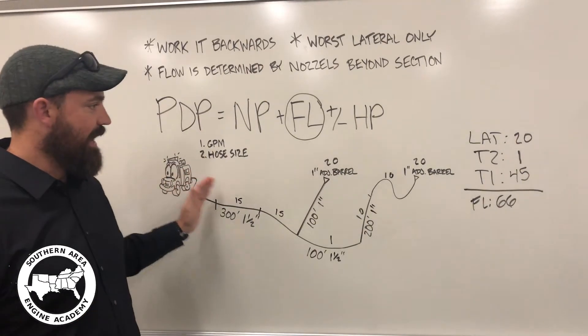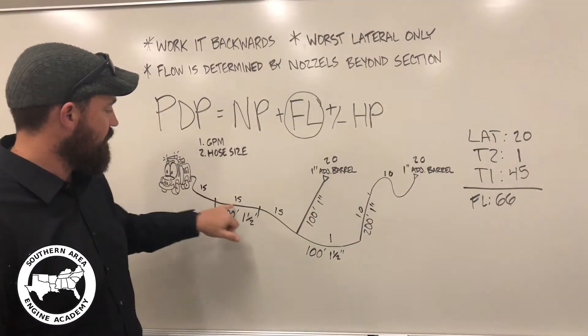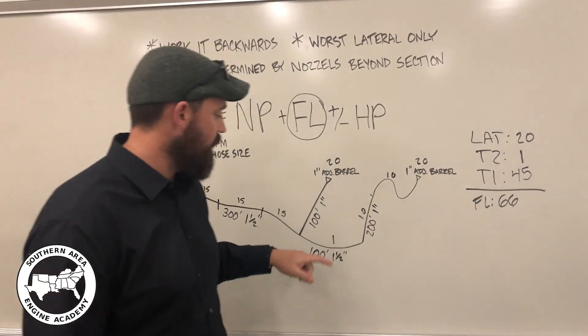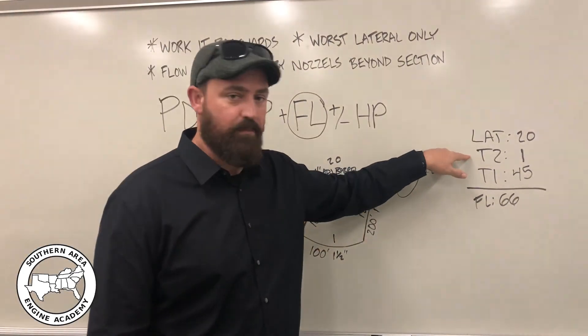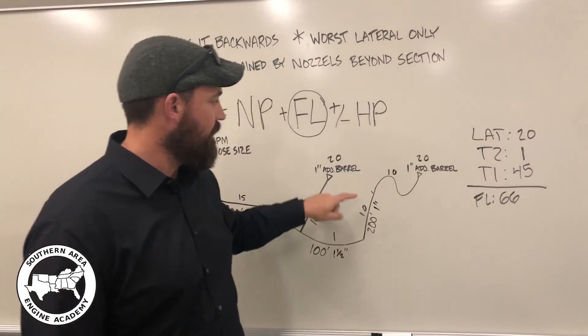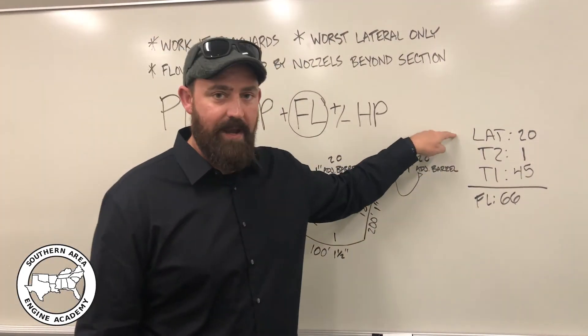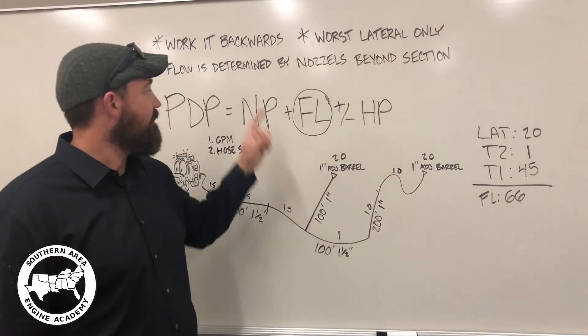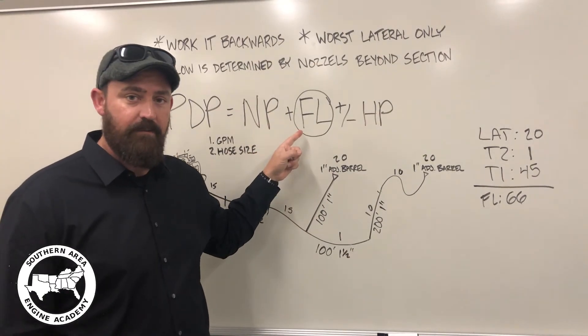So, as we added it up, we see three sections of 15 pounds, that's how we got our 45 pounds of loss for trunk one. Trunk two was one pound of friction loss, and the lateral was losing 20 pounds for a total friction loss of 66 PSI. And that is the FL component of the equation.